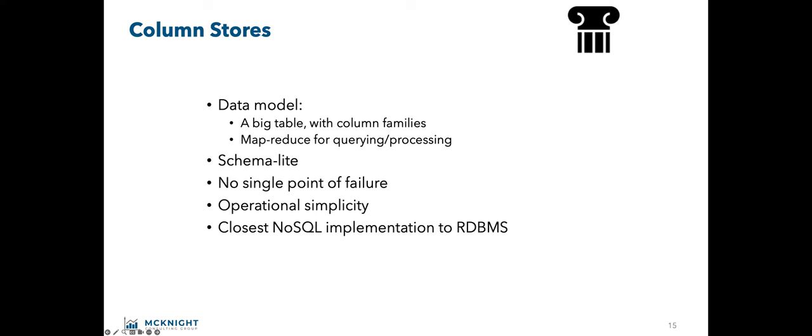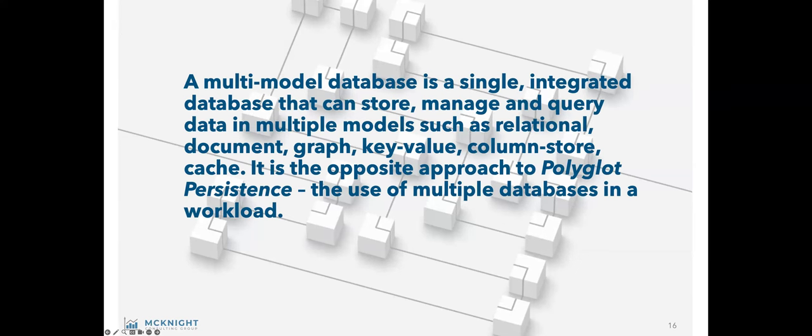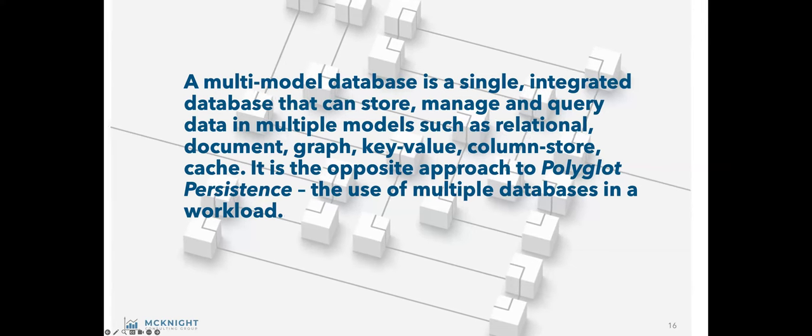Finally, column stores like Cassandra, HBase, and HyperTable are for large amounts of data that need compression — also known as BigTable. They're great for time series such as weather data, location data, and sensor data. There's operational simplicity with no single point of failure. Column stores have been used for a lot of great things, but we're moving into a new era of the multimodal database.